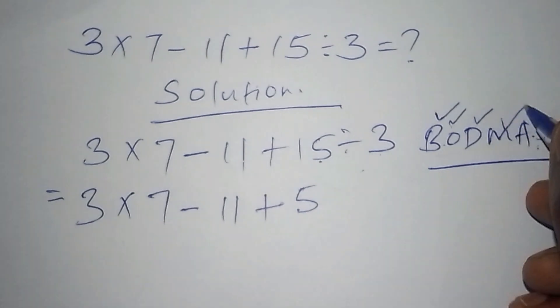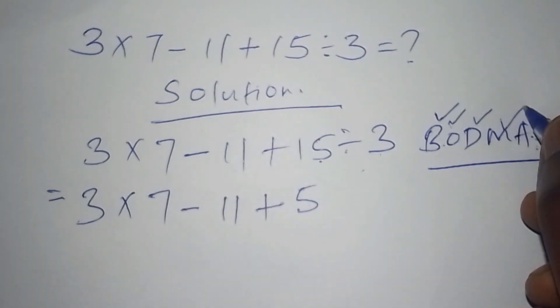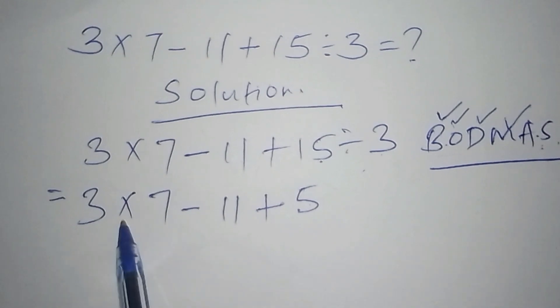We now move to M, that stands for multiplication. That's why now we have to work out 3 times 7 first.